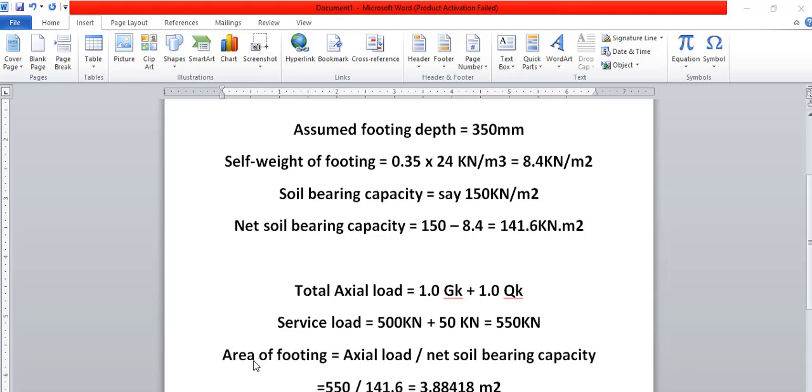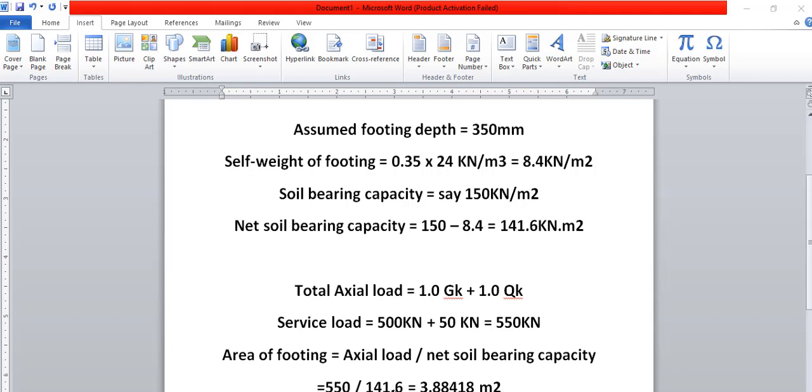Now the area of the footing will be the axial load, which is this, divided by the net bearing capacity that we've gotten. So when we did that, we are getting 550 / 141.6 = 3.88418 m2.